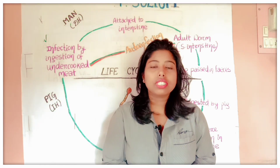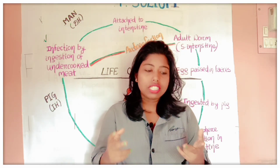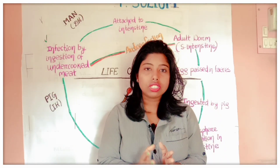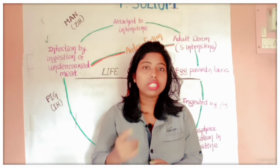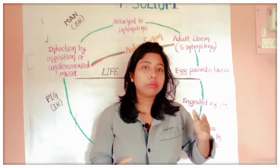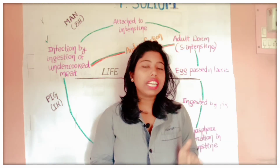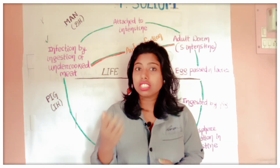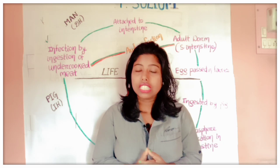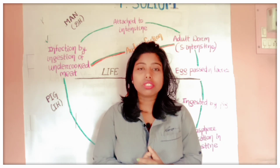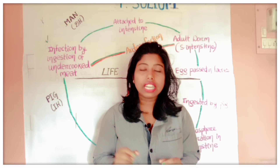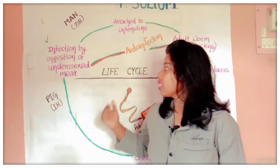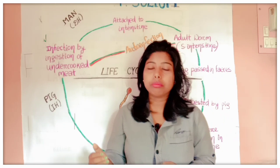As you have seen in this video, Taenia solium has two hosts: the definitive host is man, and the intermediate host is the pig. The mode of infection is eating undercooked meat — also called measly pork. So the mode of infection is ingesting undercooked meat of pig by humans.